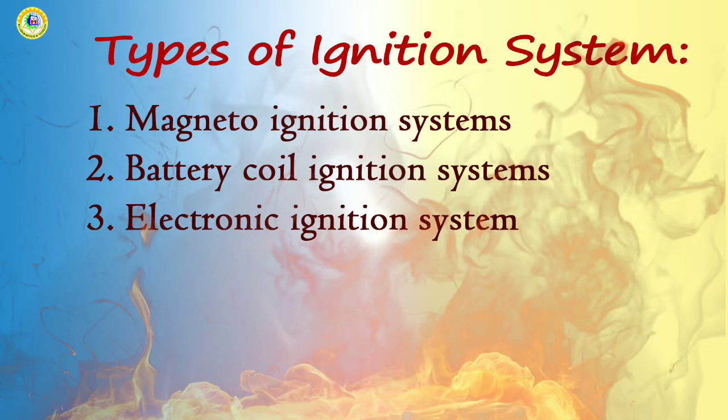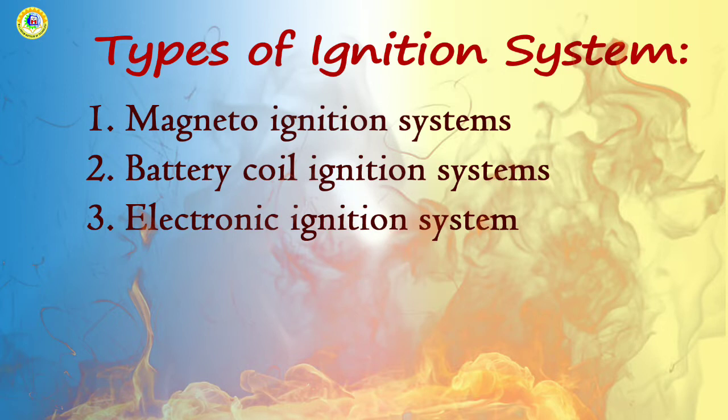Now let's look at the basic types of ignition system. The first requirement of an ignition system is that there should be a source of electrical energy. This source is a key consideration. There are several sources of electrical energy used in ignition systems, such as a battery or magneto. Ignition systems are generally classified on the basis of the source of electrical energy supply.